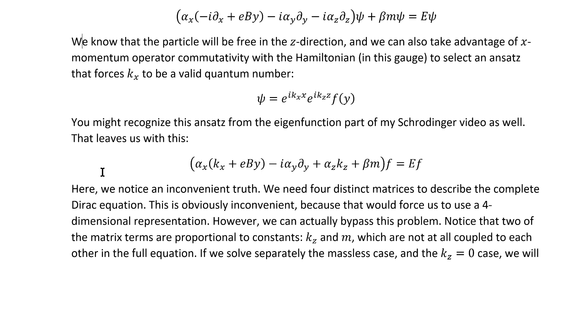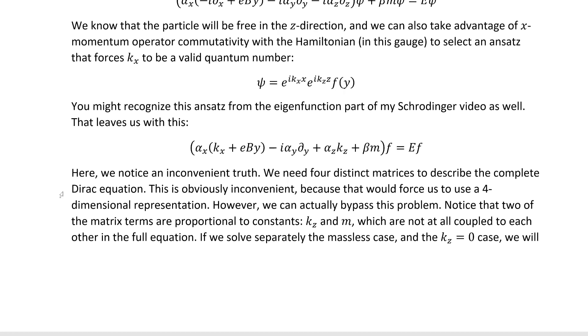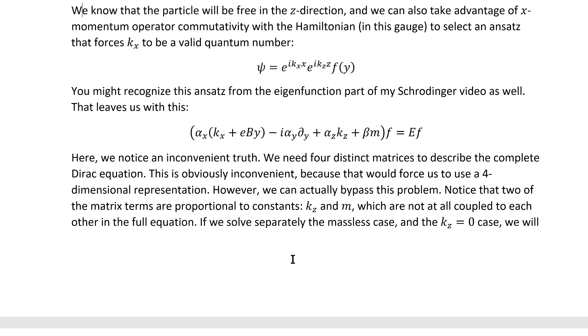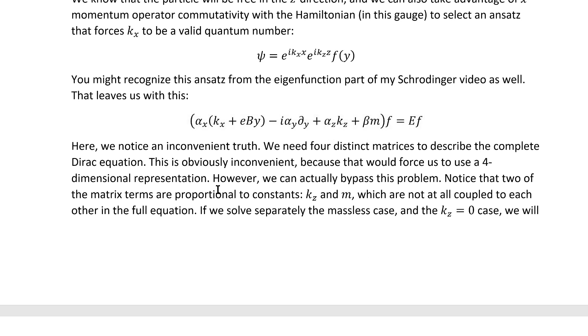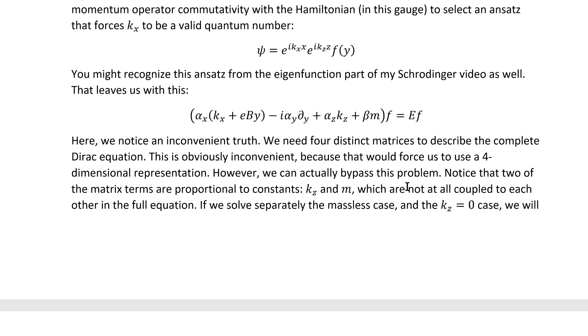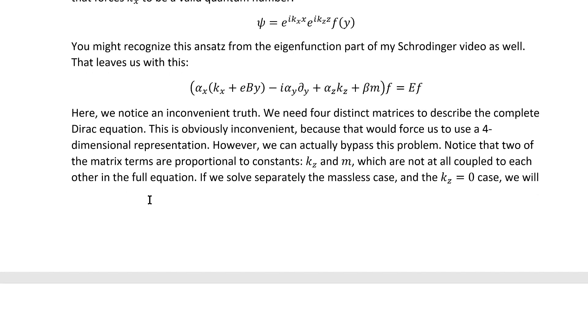Inserting it leaves us with this form for the full Dirac equation. Here, we notice an inconvenient truth. We need four distinct matrices to describe the complete Dirac equation for this problem, at least in this coordinate system and in this gauge. This is obviously inconvenient because that would force us to use a four-dimensional representation. However, we can actually bypass this problem using a little bit of cleverness. Not as much cleverness as we used in the ladder operator method, but still a little bit of cleverness.